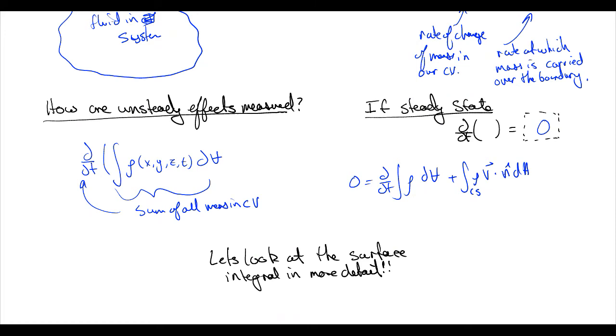Now fluid can be entering and fluid can be exiting, but this just means that the amount of fluid entering and the amount of fluid exiting has to be the same. That's all that means. So the net amount of stuff crossing our fluid boundary has to be zero, our control volume boundary has to be zero.